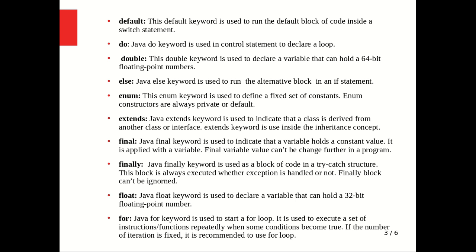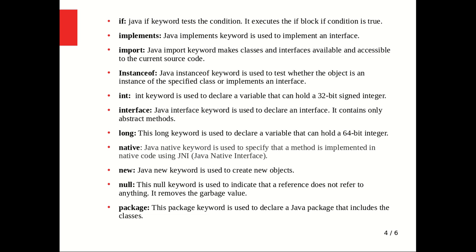The float keyword is used to declare a variable that can hold a 32-bit floating point number. The for keyword is used to start a for loop — it executes a set of instructions repeatedly when some condition becomes true. If the number of iterations is fixed and known, it is recommended to use a for loop.